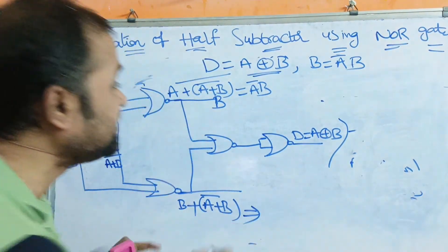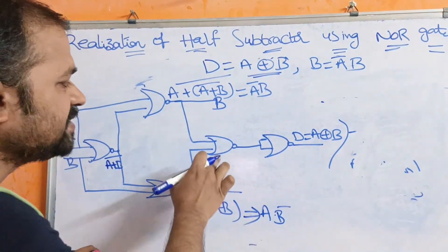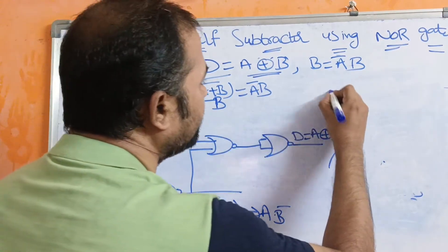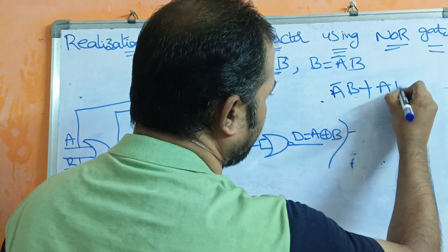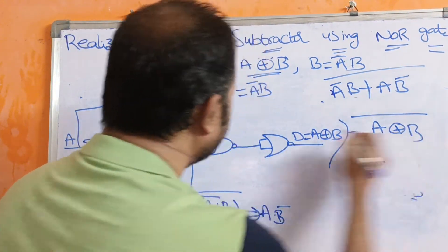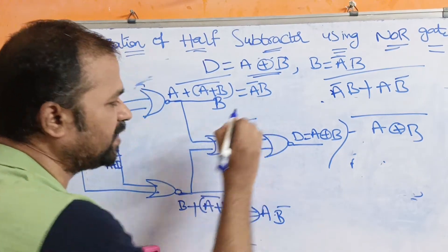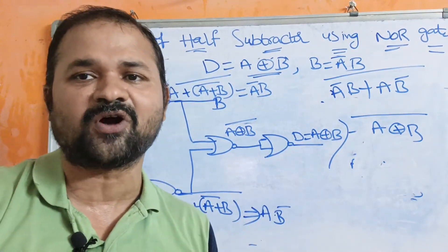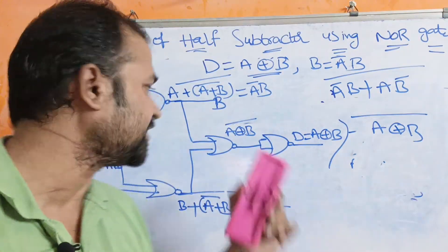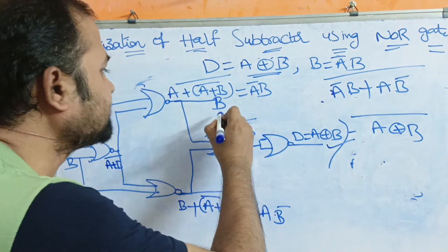Similarly, simplifying the third NOR gate output gives A·B-bar. So A-bar·B and A·B-bar are supplied as inputs to the fourth NOR gate, which produces (A-bar·B + A·B-bar)-bar. Since A-bar·B + A·B-bar equals A XOR B, the fourth NOR gate output is (A XOR B)-bar. Passing this through the fifth single-input NOR gate complements it once more, giving A XOR B, which is the difference.